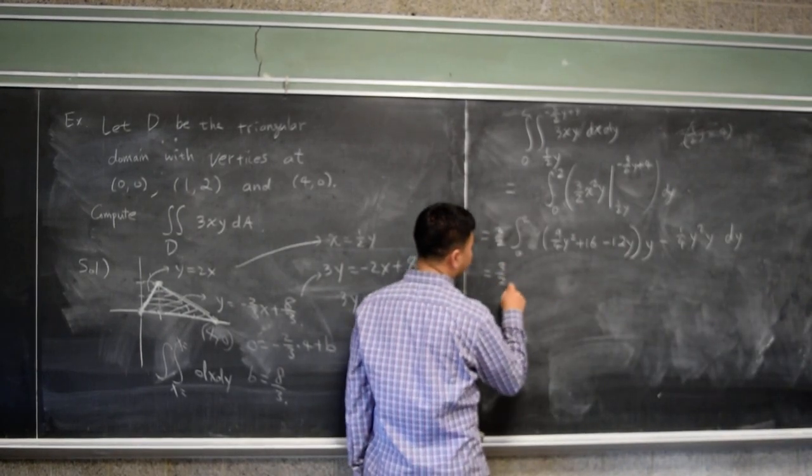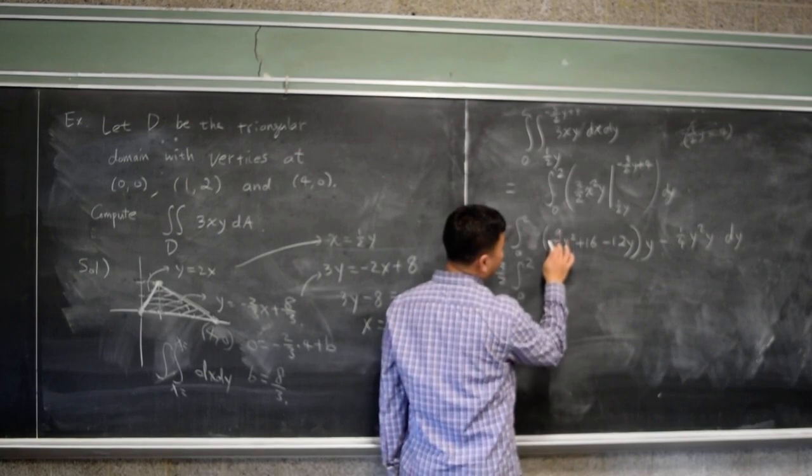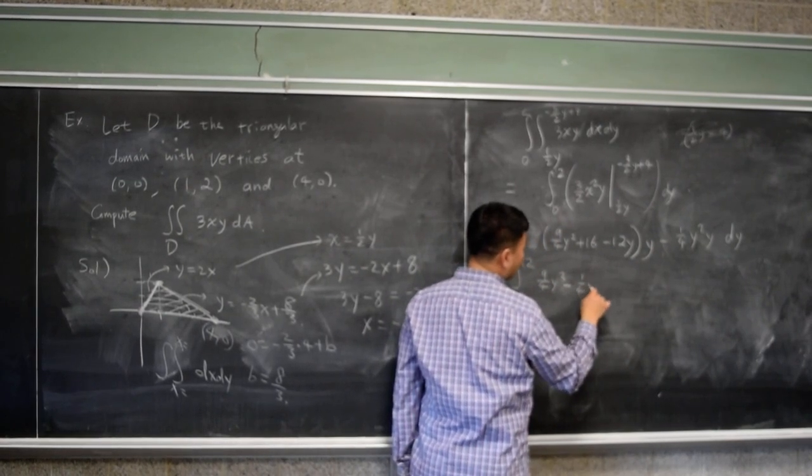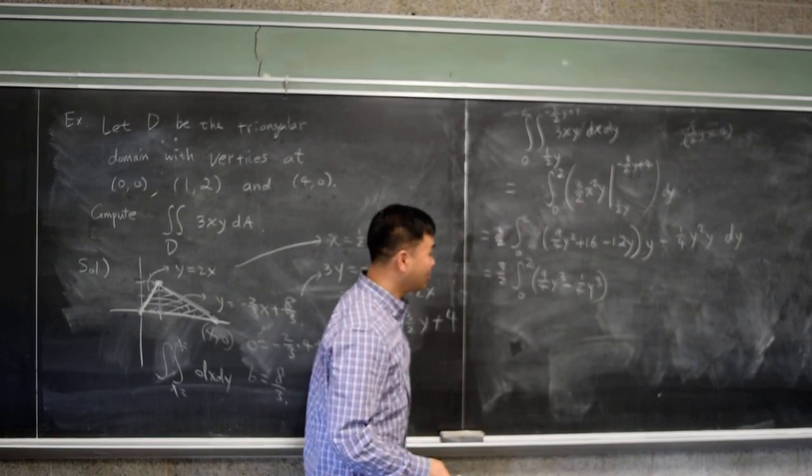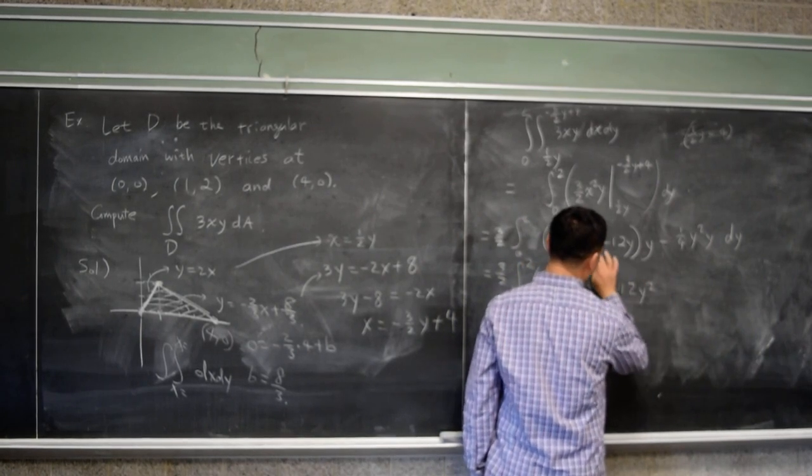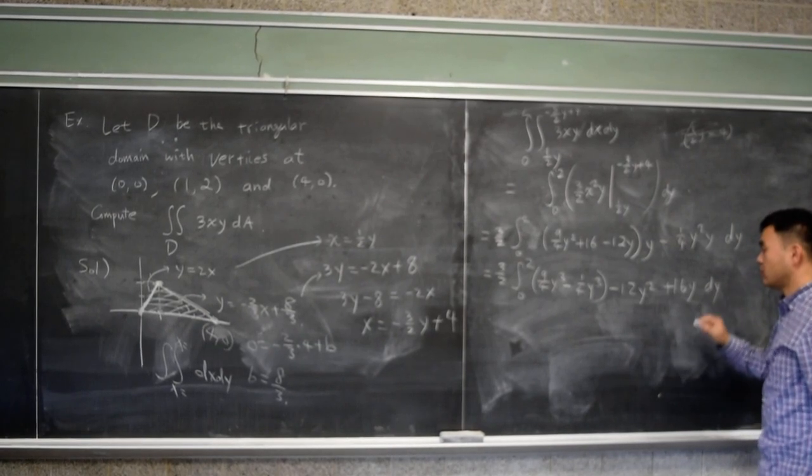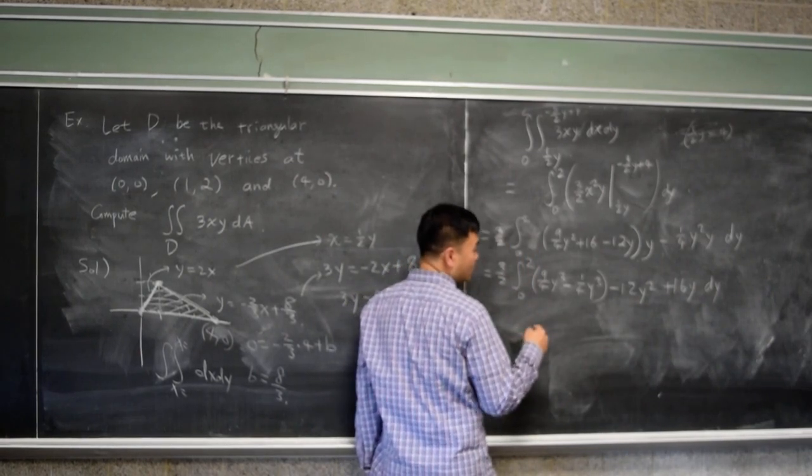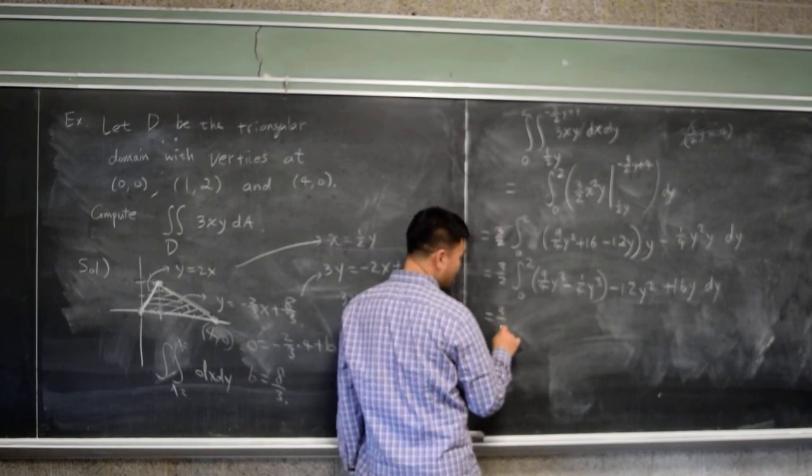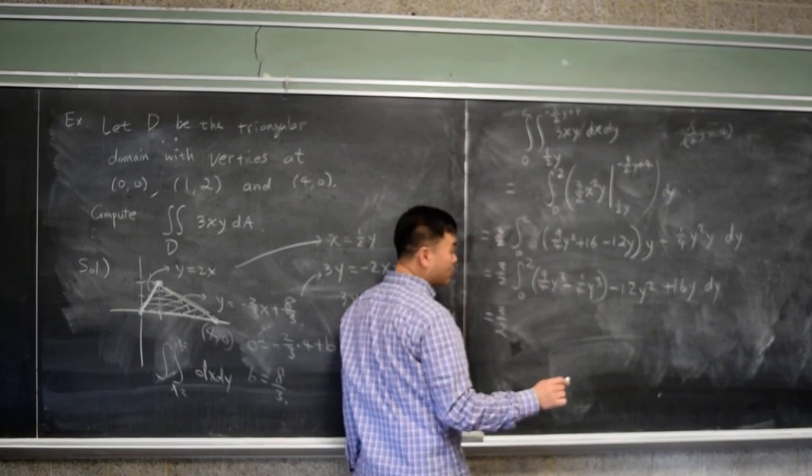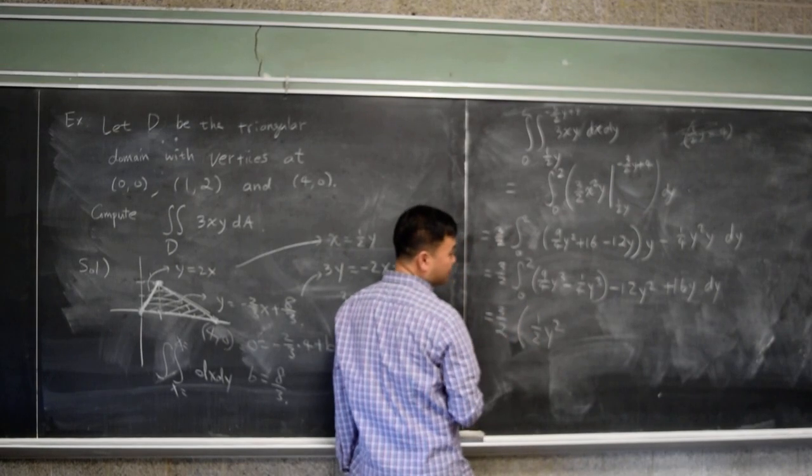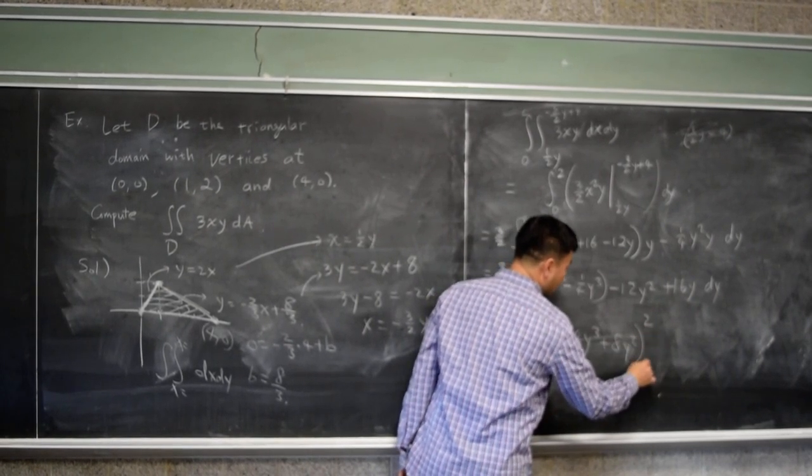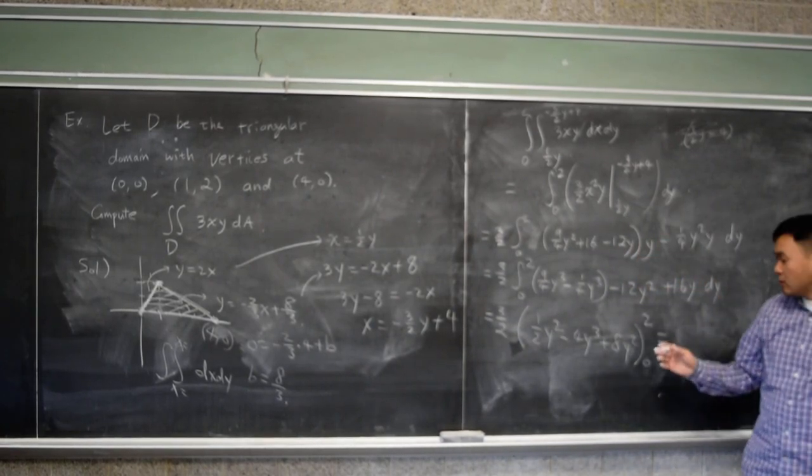So we have 9/4 y cubed minus 1/4 y cubed - I'm going to put them together because they are like terms - and then minus 12y squared and plus 16y. Okay, 9 minus 1 is 8, 8/4 is 2. 2y cubed. If you integrate 2y cubed, what do you get? That's y cubed integrates to 1/4, so it's 1/2 y to the 4th, minus 4y cubed, plus 8y squared. And you're plugging in 2 and 0. Oh sorry, this is fourth.